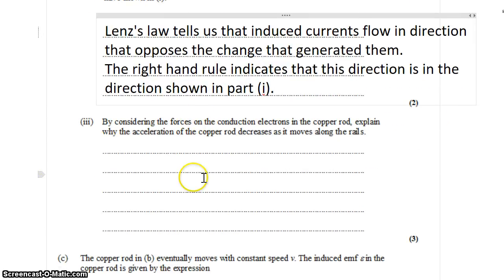By considering the forces on the conduction electrons in the copper rod, explain why the acceleration of the copper rod decreases as it moves along the rails. So this is that interesting question that I alluded to before. We're applying a constant force to the rods, so you might expect a constant acceleration, but the acceleration is actually reducing.